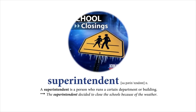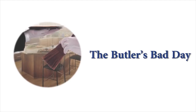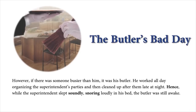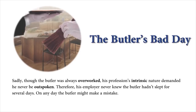The Butler's Bad Day. The superintendent of civic projects was a busy man. He worked every day of the week and had fancy parties at his house every night. However, if there was someone busier than him, it was his butler. He worked all day organizing the superintendent's parties and then cleaned up after them late at night. Hence, while the superintendent slept soundly, snoring loudly in his bed, the butler was still awake. Sadly, though the butler was always overworked, his profession's intrinsic nature demanded he never be outspoken. Therefore, his employer never knew the butler hadn't slept for several days.